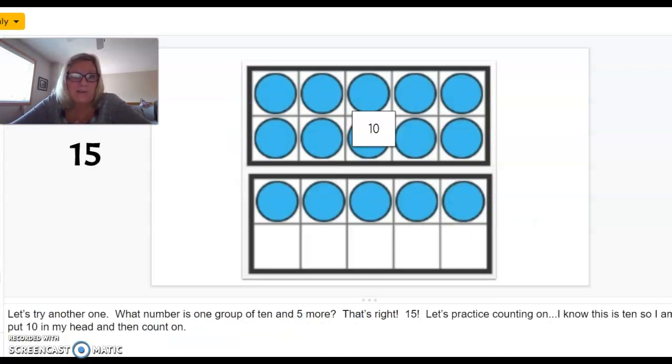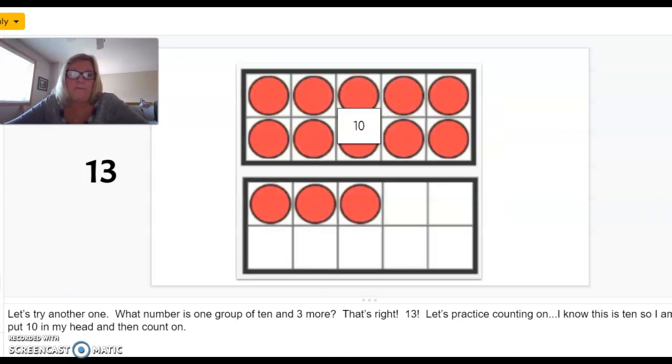All right. Now, let's try this. What number is one group of 10 and five more? Can you figure it out? One group of 10 and five more. That's right. It's 15. Now, let's practice counting on. I know this is a 10. So, I'm going to put 10 in my head and then I'm going to count on. Say 10, 11, 12, 13, 14, 15. If you said 15, you are correct.